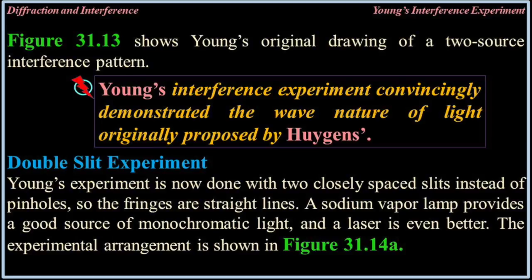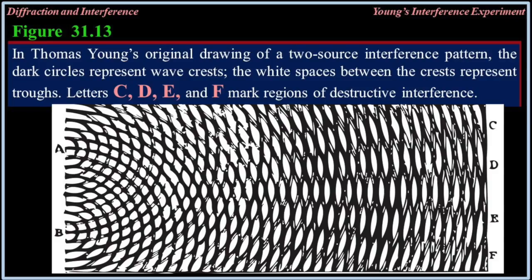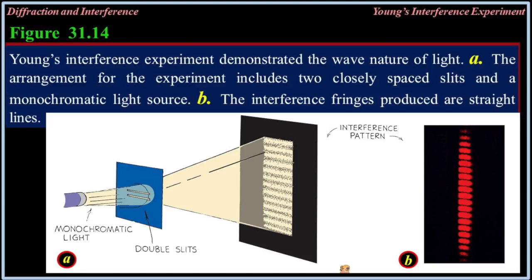Double slit experiment. Young's experiment is now done with two closely spaced slits instead of pinholes, so the fringes are straight lines. A sodium vapor lamp provides a good source of monochromatic light, and a laser is even better. Figure 31.13 shows Young's original drawing of a two-source interference pattern. Dark circles represent wave crests; white spaces represent troughs. Letters C, D, E, and F mark regions of destructive interference. Figure 31.14: Young's interference experiment demonstrated the wave nature of light. The arrangement includes two closely spaced slits and a monochromatic light source, and the interference fringes produced are straight lines.